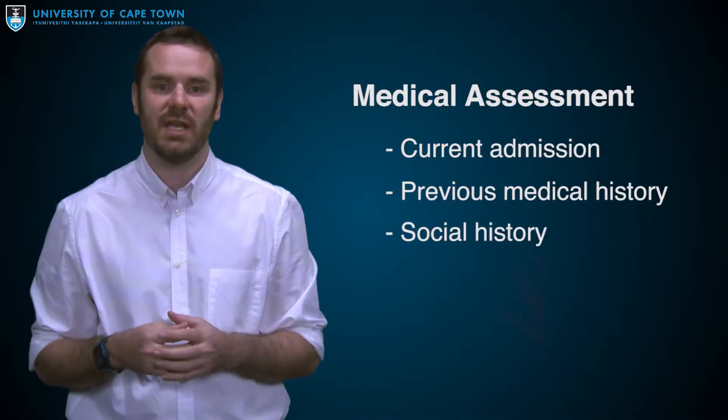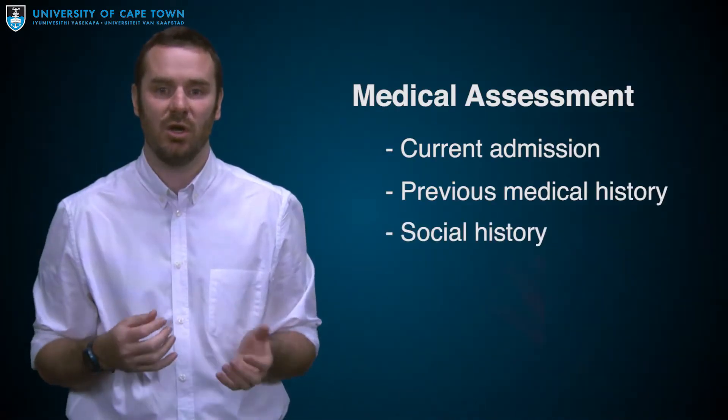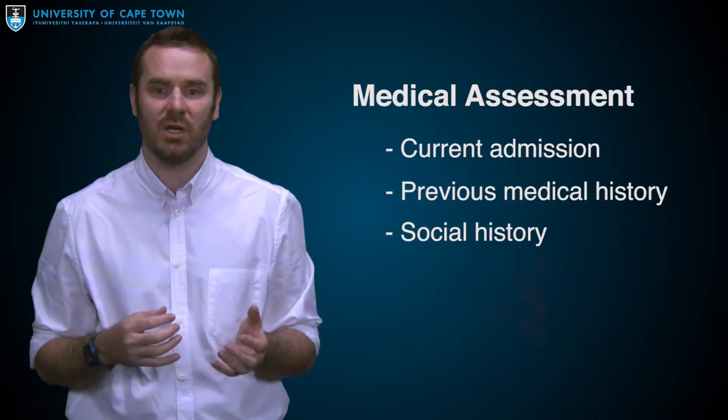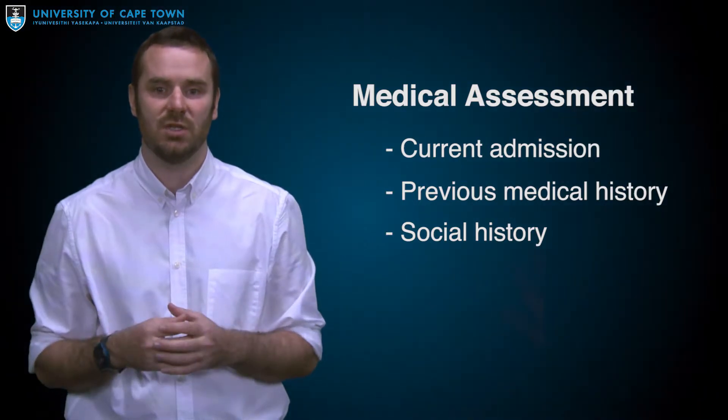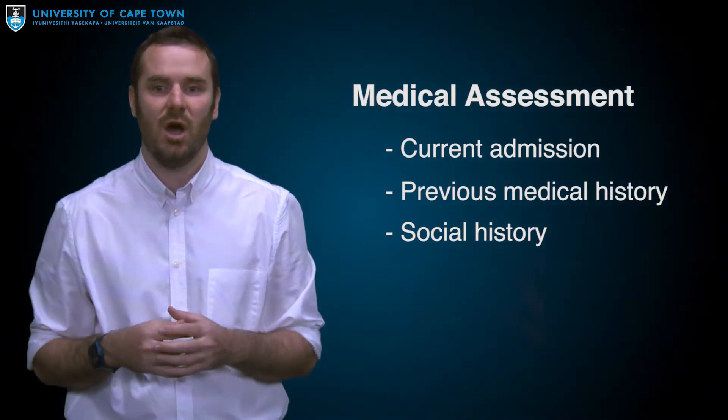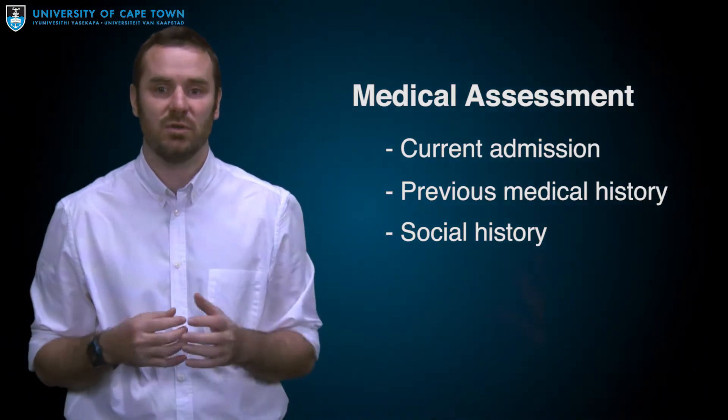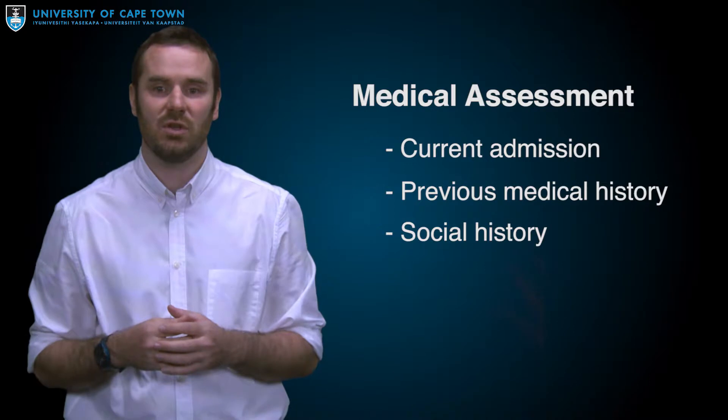A social history is taken regarding alcohol use, drug use, and a history of incarceration. Alcohol use is of relevance to liver transplantation, while the latter two increase the infectious risks related to transplantation.